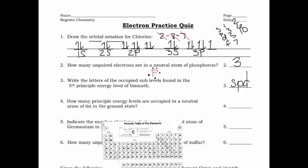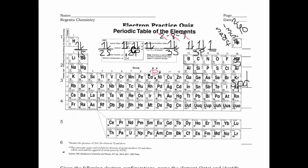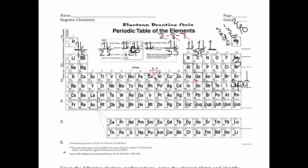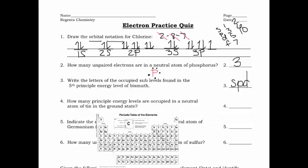Number four: how many principal energy levels are occupied in a neutral atom of tin? Tin is Sn, right here on the periodic table. You could count the number of numbers in the electron configuration, which ends up being five. Or you could look at what period it's in — whatever row or period the element is in, that's how many occupied principal energy levels it has. For tin, that's five.